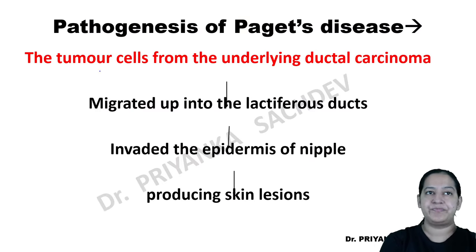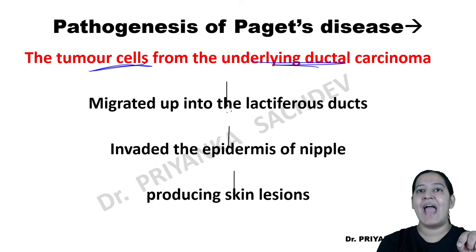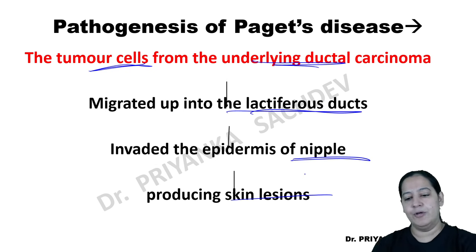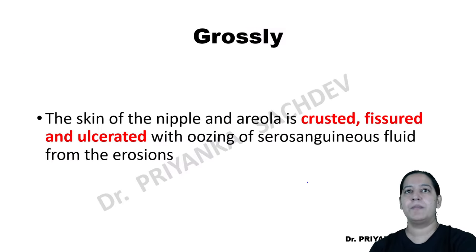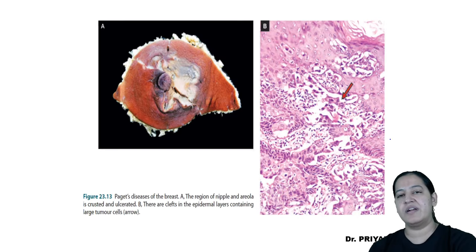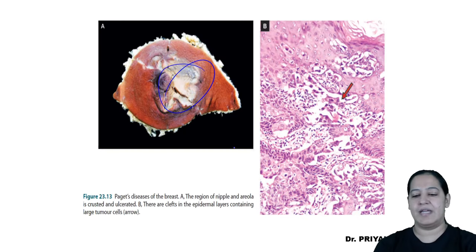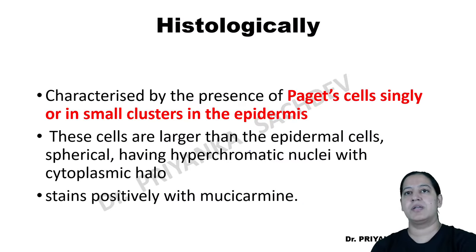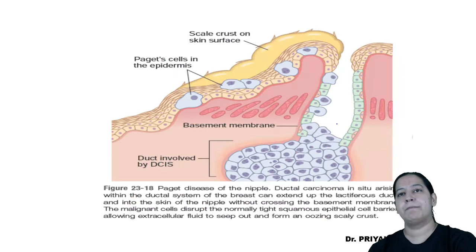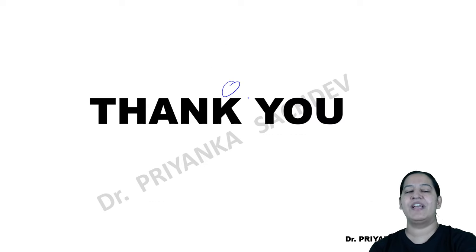So the same diagram shows: the tumor cells travelling in blue along the lactiferous duct, entering the epidermis — these are Paget cells. Tumor cells from the underlying malignancy enter the lactiferous duct, go to the nipple, and produce skin lesions there. The patient presents with itching, fissure, and ulceration. Histologically, you will see Paget cells in the epidermis. That was all about Paget disease.